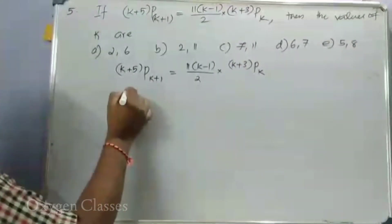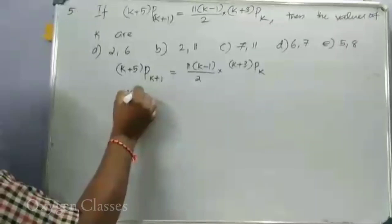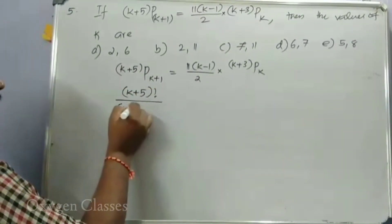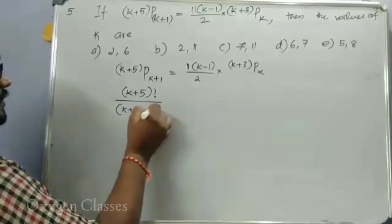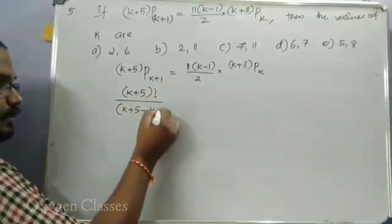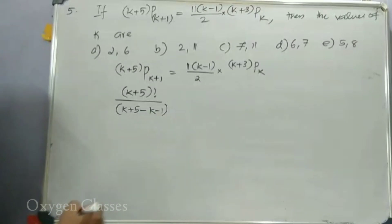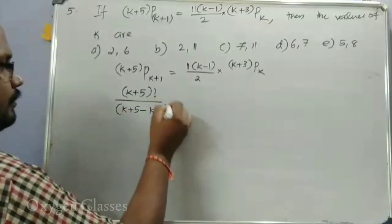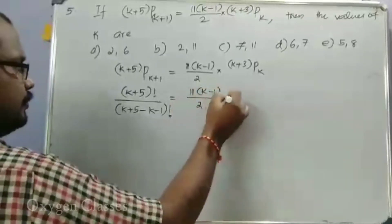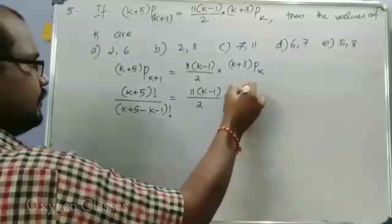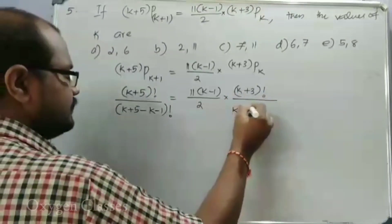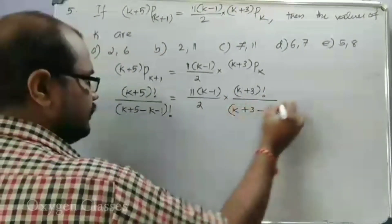Expanding using the nPr formula: k+5 factorial divided by (k+5 minus k minus k+1) factorial, minus k minus 1 factorial, is equal to 11 into (k-1) by 2 into (k+3) factorial divided by (k+3 minus k) factorial.